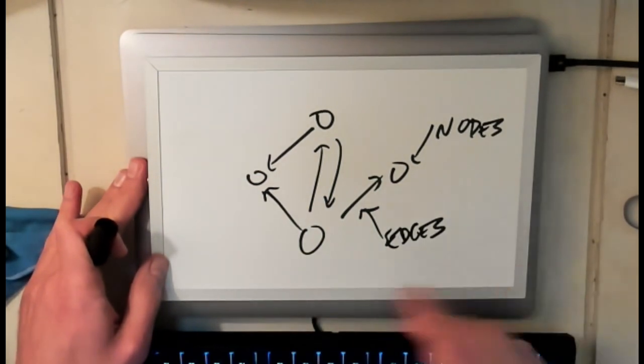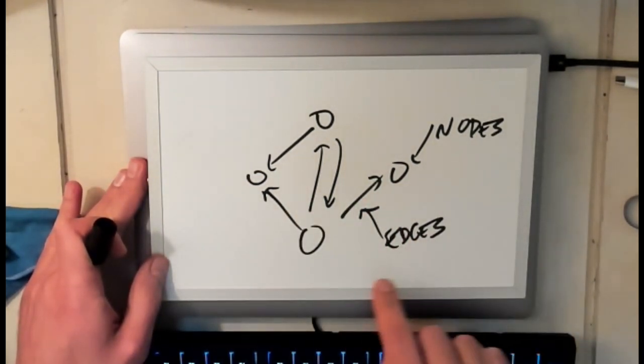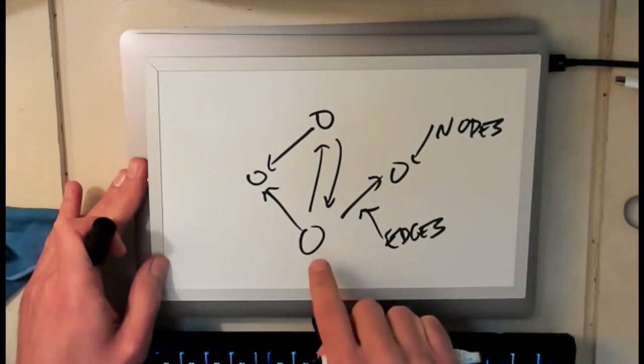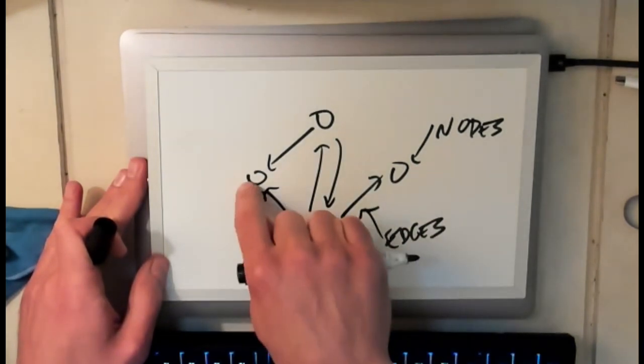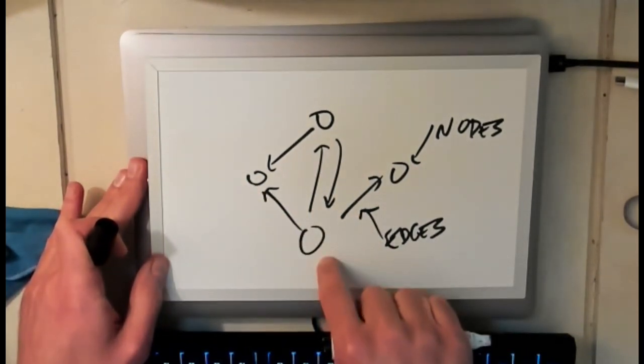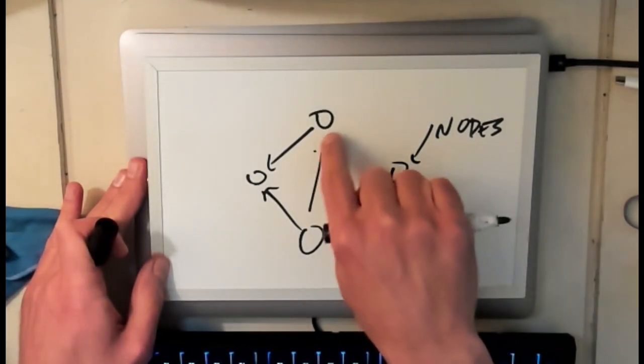And you can imagine there are certain graphs in real life that have this property, right? A friend graph, right? You know, this person might be friends with this person but this person doesn't consider that person a friend, right? So directed graphs can be quite useful.